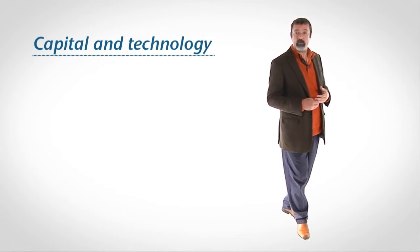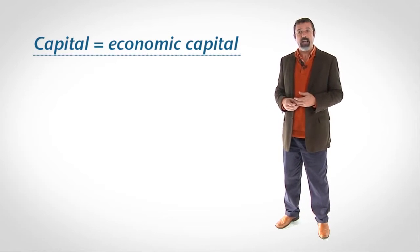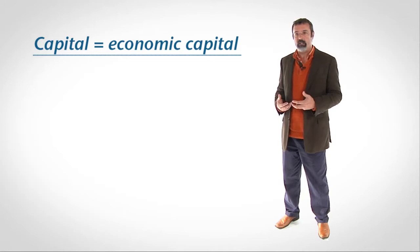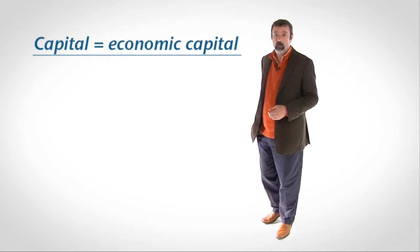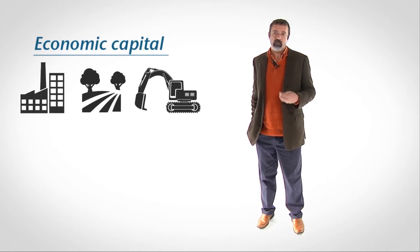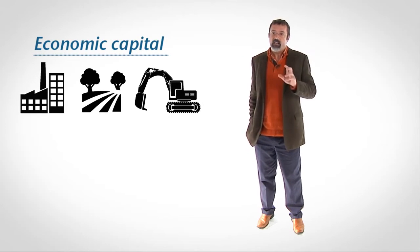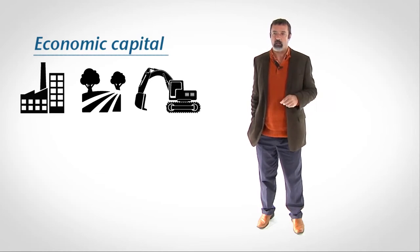Typical examples of long-run factors are capital and technology. Capital is also called economic capital to distinguish it from investment money, which in business courses is also called capital, or financial capital. Examples of economic capital are buildings, land, and machinery — things that are used to transform labor and materials into product.